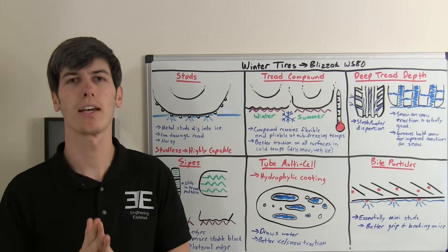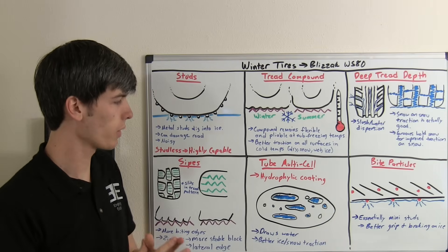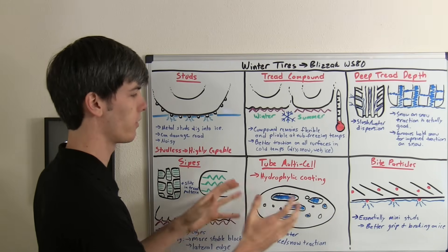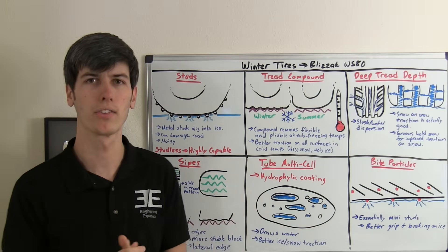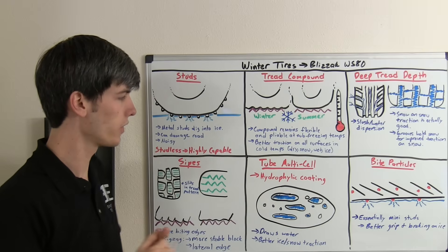Next, let's talk about multi-cell compounds. Basically what this is, if you're taking a magnified view of the tread compound, then what you'll notice is it's porous, and the reason they do this is for icy conditions.